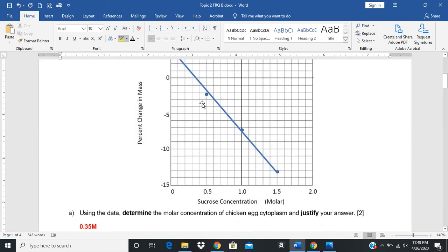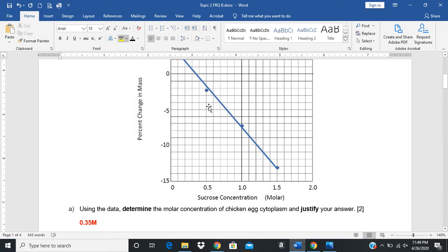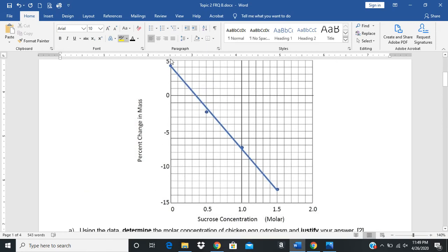The first question says: using the data, determine the molar concentration of the chicken egg cytoplasm. You can see my answer is 0.35 molar. How did I get that? You look at the graph wherever this line crosses zero. That's the point where you can determine the molar concentration, because that's where the eggs are in equilibrium with the surrounding environment. If that's the equilibrium point where there's no change in mass, then you can simply extrapolate down here to the bottom and determine that.